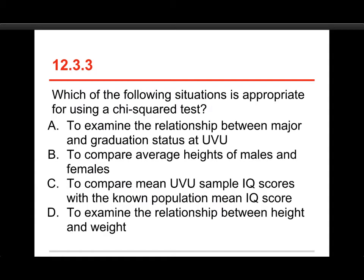Which of the following situations is appropriate for using a chi-squared test? This is number three. A, to examine the relationship between major and graduation status at UVU. B, to compare average heights of males and females. C, to compare mean UVU sample IQ scores with the known population mean IQ score. Or D, to examine the relationship between height and weight.